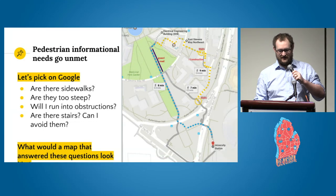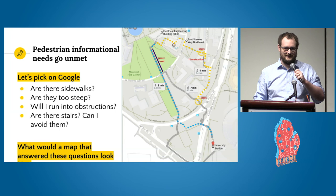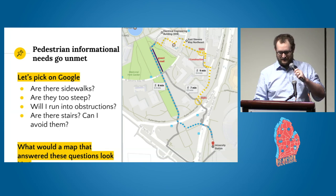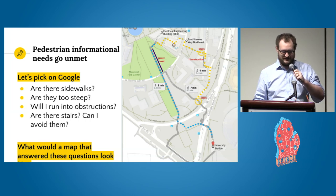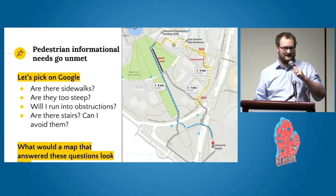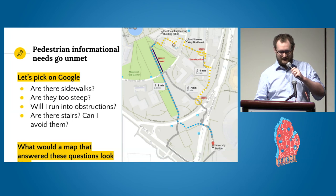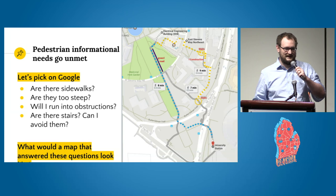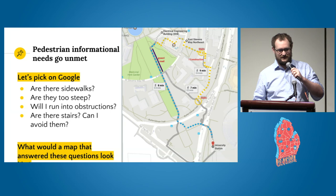As an example of these pedestrian informational needs going unmet, I'm going to pick on Google — they're average, if not better than average, but a stereotypical example. You still can't ask: where are sidewalks? Where is too steep? Will I run into obstructions? On the right, I'm showing a typical route request on Google Maps — University of Washington campus, going from a light rail station to a building. Every single route here would be impassable for a stereotyped wheelchair user. The chosen path has a massive section of gravel without enough traction, and the other two routes both include stairs.